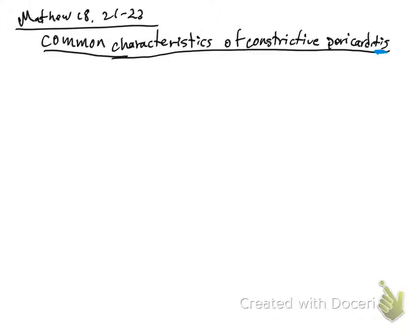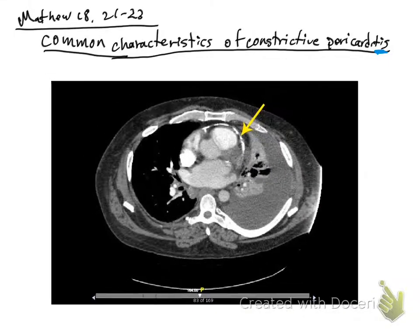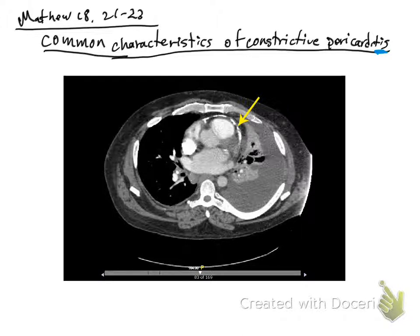I would like to show you an image of a CT scan. In this CT scan image, we can see how constrictive pericarditis looks. Before we continue, we are going to see what is going to cause this.